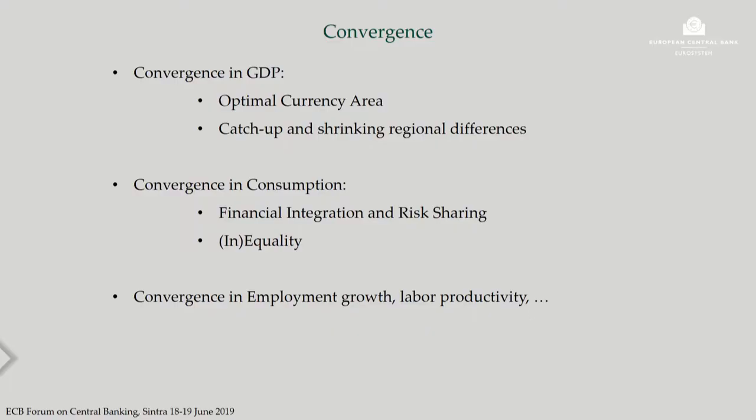Thanks very much. It's a privilege to be here. This is a project with my co-author Laurent Powell, and what we're trying to do is take stock of 20 years of convergence. I'll be talking about two types: convergence in GDP — the reduction in dispersion of GDP growth rates — which is of paramount importance for the conduct of monetary policy, as it's one of the criteria for an optimal currency area.